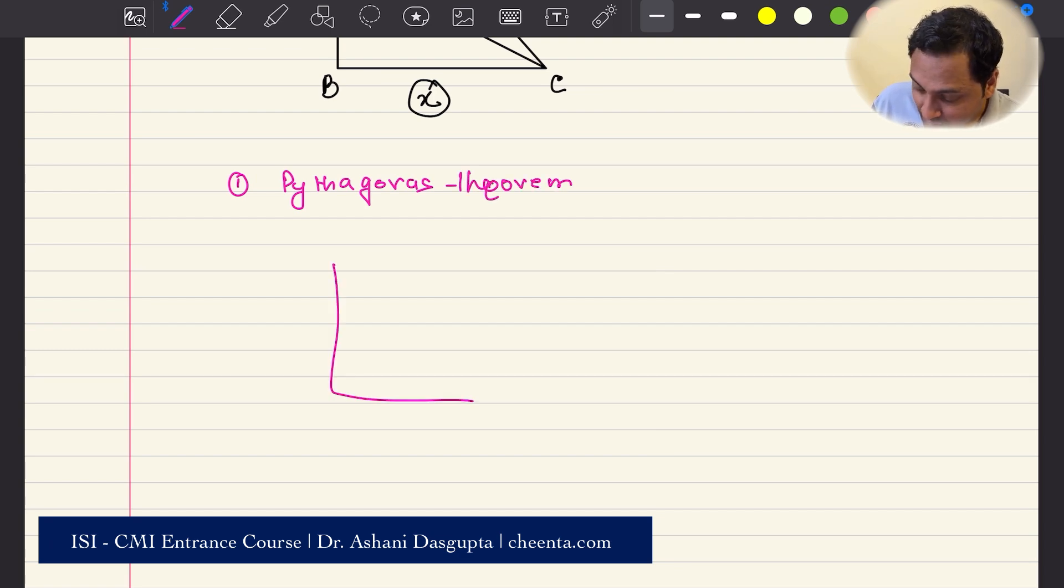Many of you know about this. It basically says that if you have a right triangle, then if this side is X, this side is Y, and the hypotenuse, that is the largest side is Z, then X squared plus Y squared is equal to Z squared. That's the Pythagoras theorem.